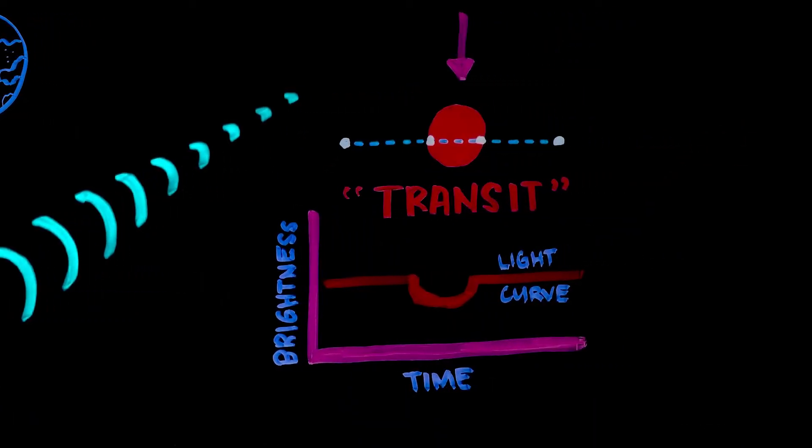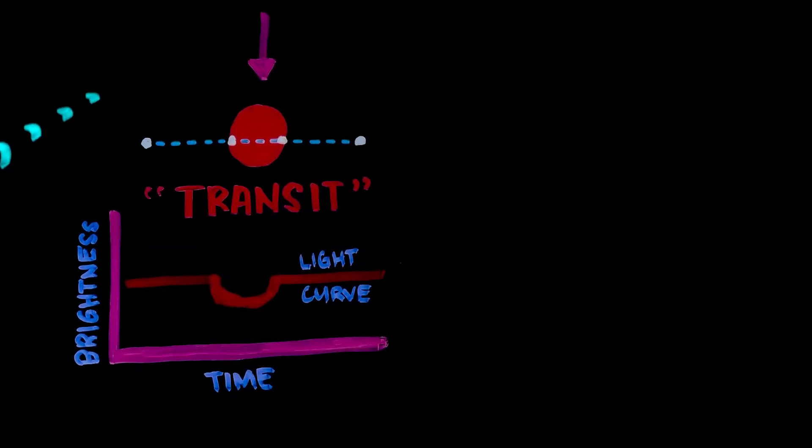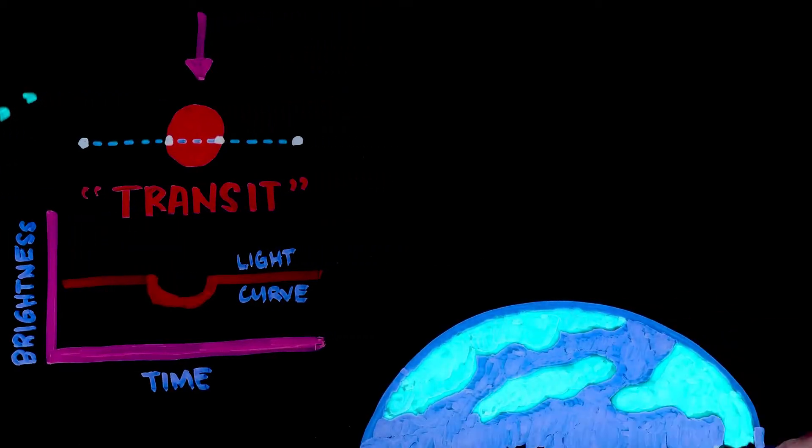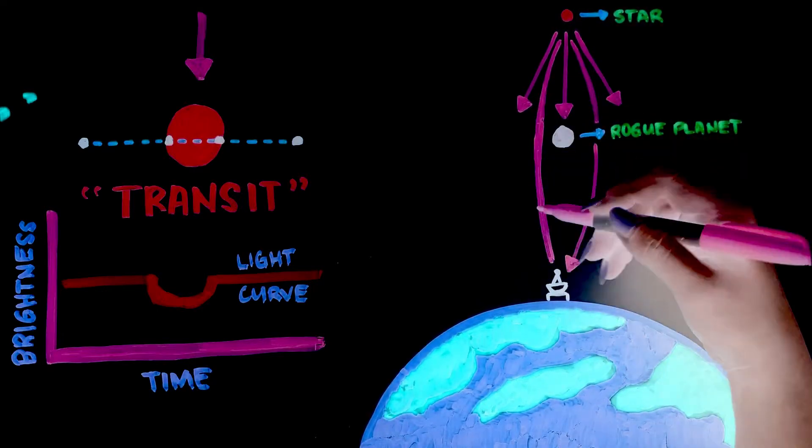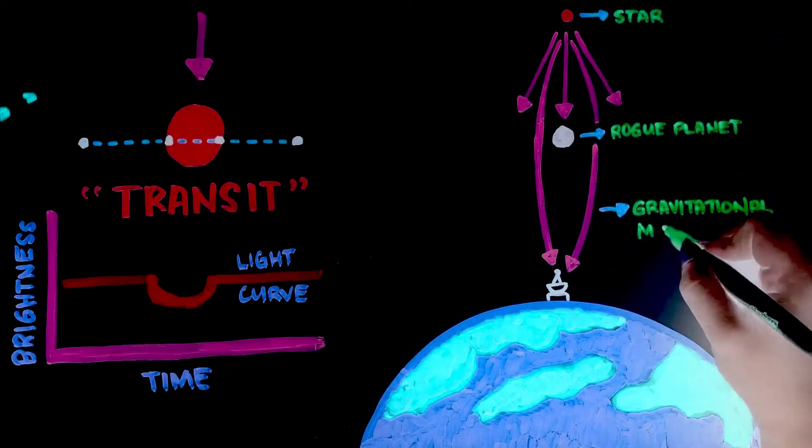Instead, astronomers look at how the planets affect the stars that are much farther away. From our perspective on Earth, they wrap the light of the background star causing it to magnify and brighten, acting like a lens. This is called gravitational microlensing.